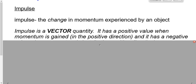The other situation where I can have a positive impulse is if I lose momentum in the negative direction. So in other words, I'm moving to the left but I slow down. If I'm moving to the left and I slow down, the force must be to the right, and therefore the impulse is to the right. So we have a positive impulse if I gain momentum in the positive direction or if I lose momentum in the negative direction.